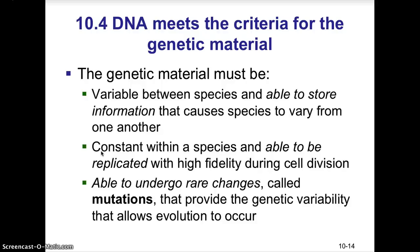DNA meets the criteria for the genetic material: it is variable between species and able to store information causing species to differ from one another; it is constant within a species and replicable with high fidelity during cell division; and it is able to undergo rare changes called mutations that provide genetic variability, allowing evolution to occur.